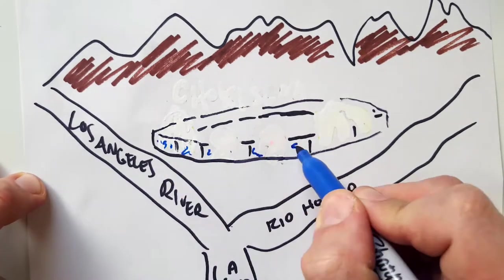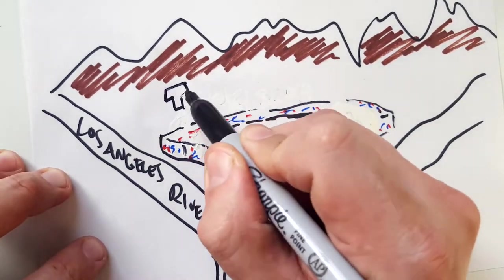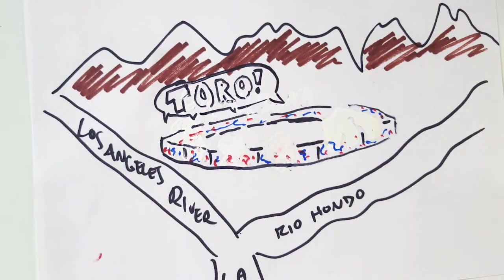And so the Spanish come and we all know the story. They take all the native peoples and they put them up in their missions and they start to Christianize them and strip them of their ancestral knowledge.